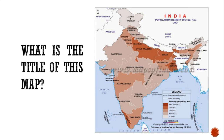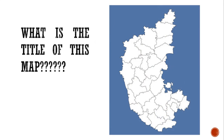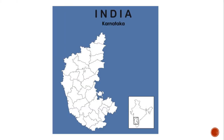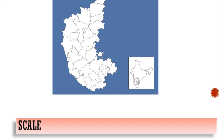Consider the map 'India Population Density 2001.' Can you say which region is depicted on the map? It is not easy for us to recognize a place that is unfamiliar without a title. Now with the title, it is easy to say that it is Karnataka, one of the states in India.